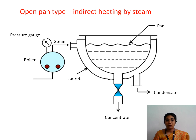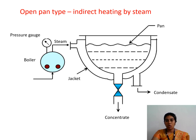This is an open pan type evaporator. The food samples will be placed — mainly juices or fruits — inside this pan. In the annular space, either steam or hot water is used as the heating medium. Steam is used here, which indirectly heats the food present inside this vessel.